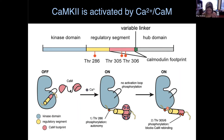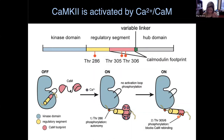That's due to steric interactions between negatively charged residues at the base of the C-lobe and the phosphate group, which keeps the regulatory segment from rebinding very strongly. Then we have these other phosphorylation events at T305/T306, which are actually in the calmodulin binding segment. These sites are really interesting and we know they're important physiologically, but from a biochemical and molecular standpoint, the function of these sites is still kind of murky.